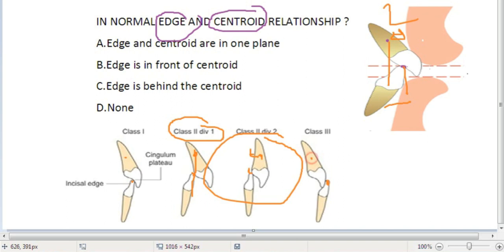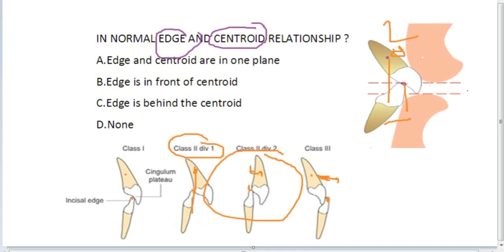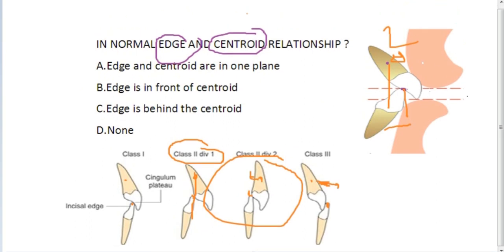And in Class 3, your edge is going to be way ahead of your centroid, definitely more than 2mm. This is a very basic concept. If you know the concept, this question becomes very easy and will take just 15 to 20 seconds to identify the answer.